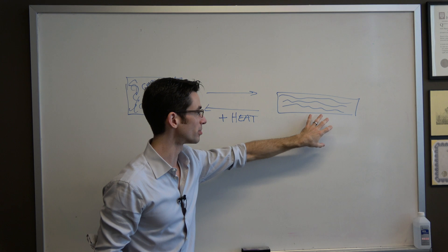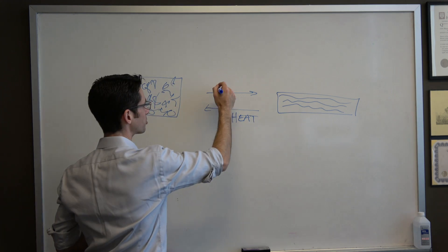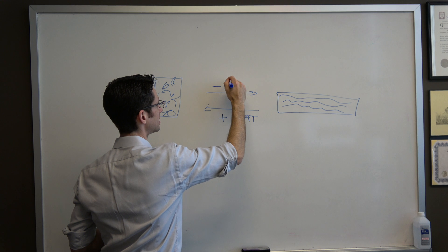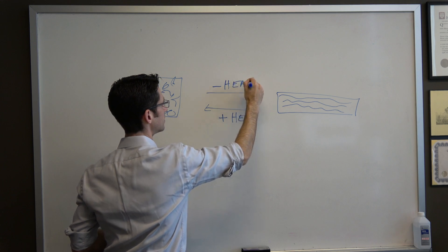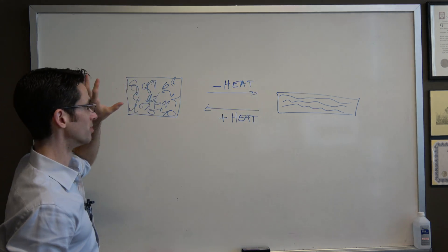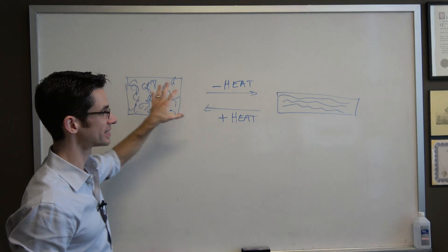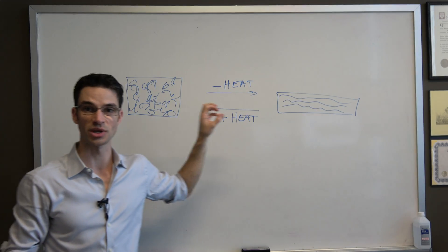So it's endothermic going from here to here, and it's exothermic. We need to subtract heat to go from the coiled state to the extended state, or from the compressed state to the stretched state.